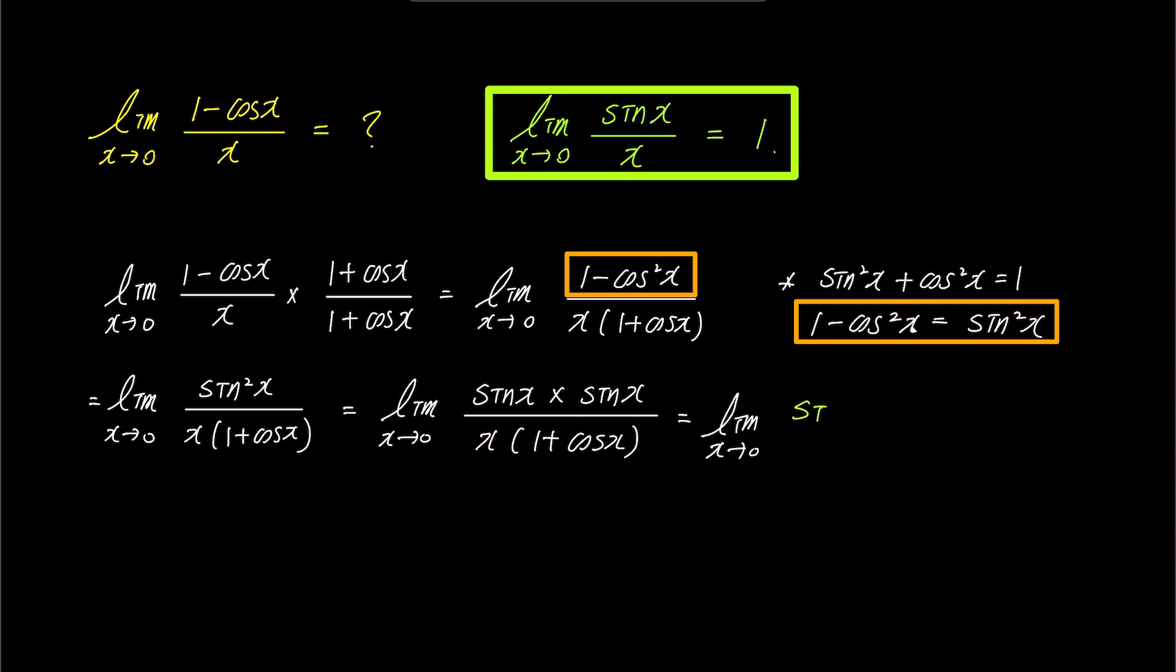Now, we have sine x over x times sine x over 1 plus cosine x, and the expression highlighted in green simplifies to 1, as shown in the green formula on the top screen.